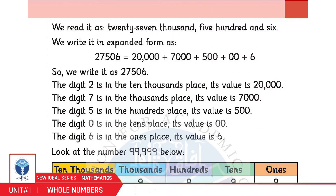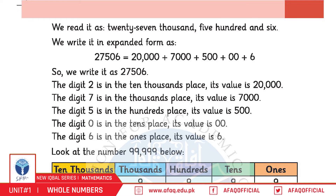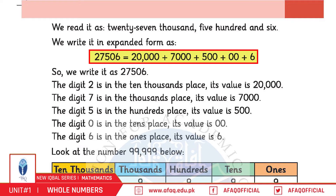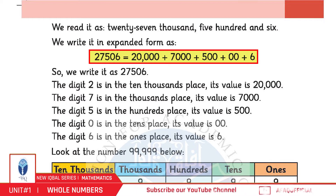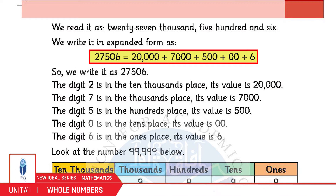If we write this number in expanded form, then 27,506 equals 20,000 + 7,000 + 500 + 0 (tens) + 6.